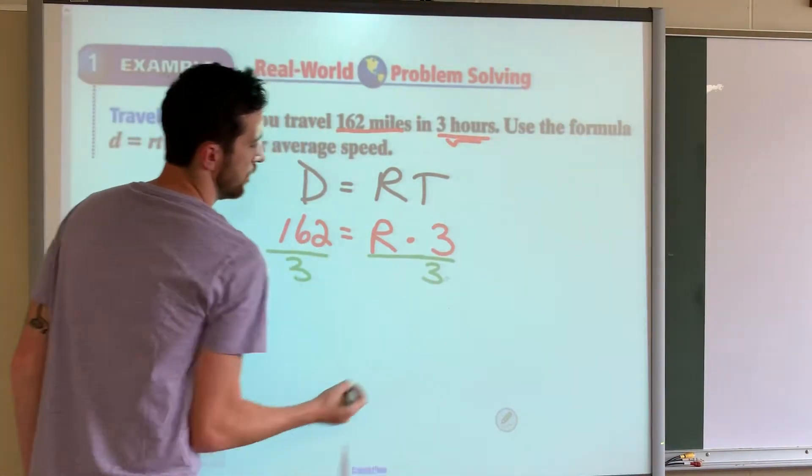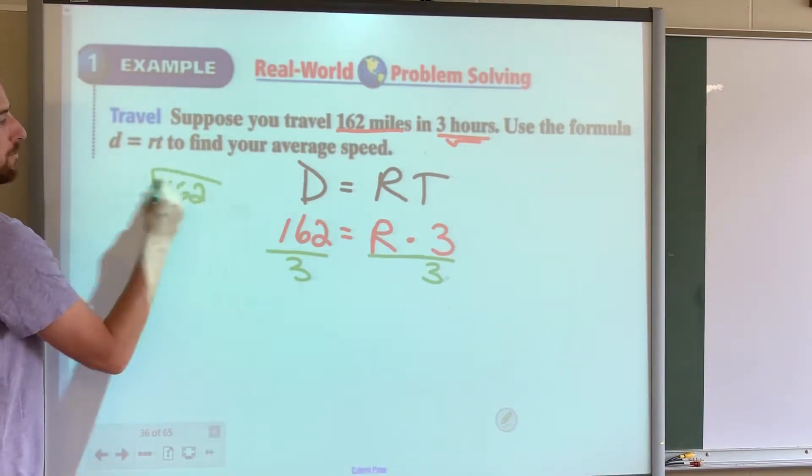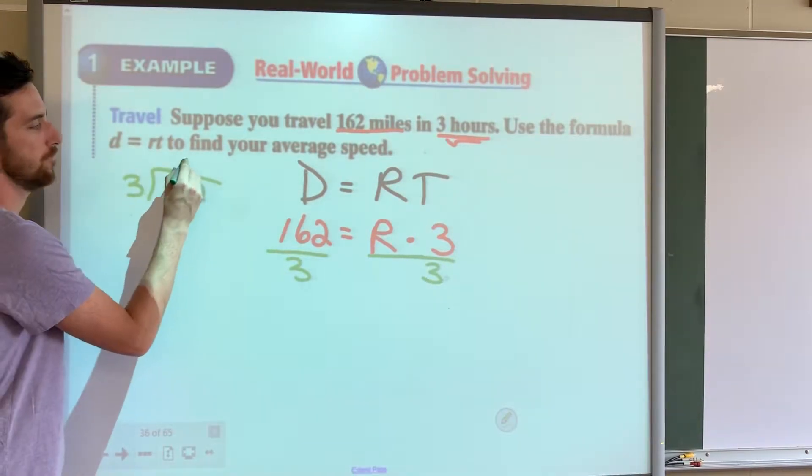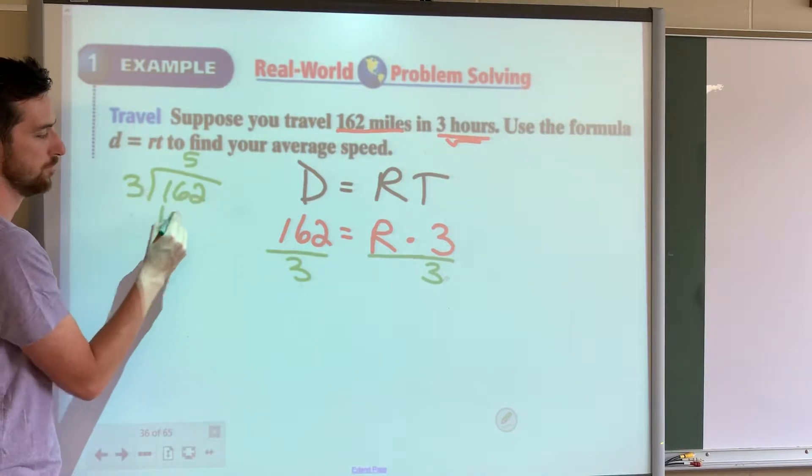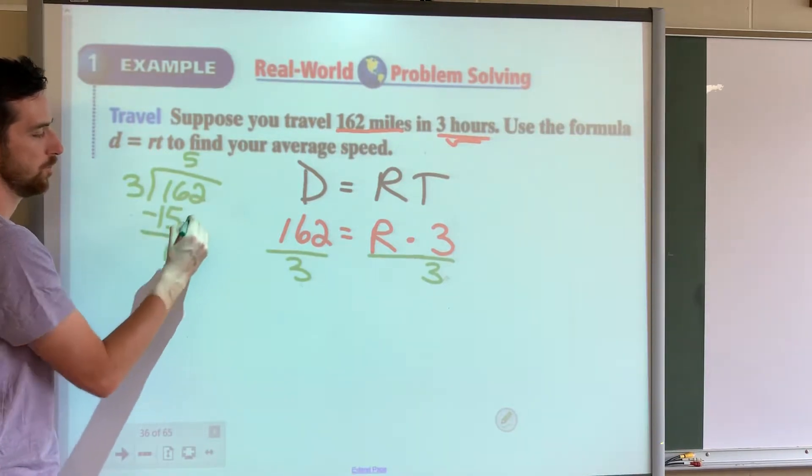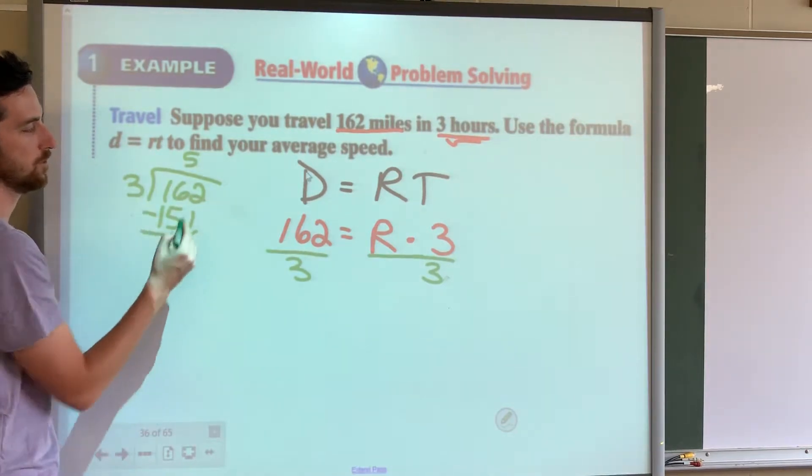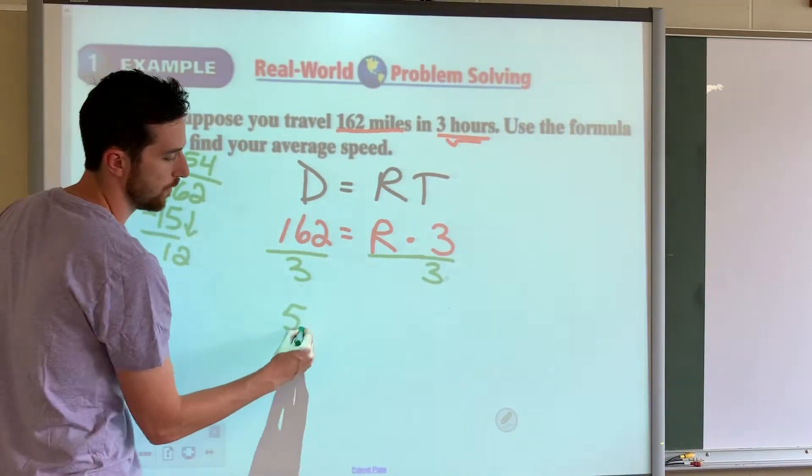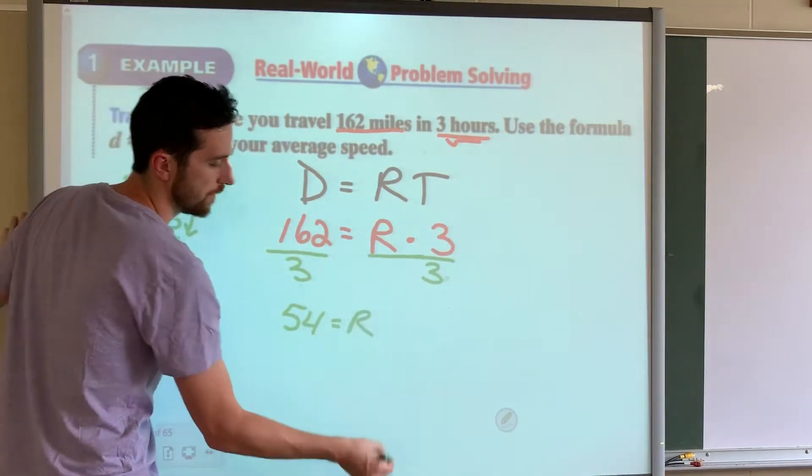So if we do 162 divided by three: three goes into 16 five times, five times three is 15. Bring down the two. Three goes into 12 four times, so 54. Now if I said, what is your average speed and you said 54 equals R, I don't even know what to do with that answer.